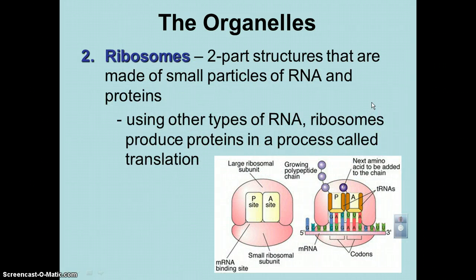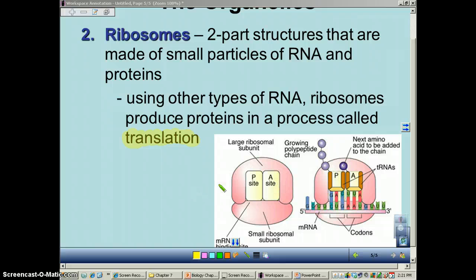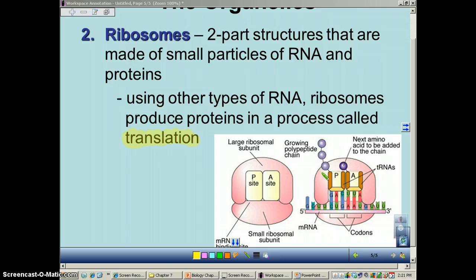Now let's start to look at some of the various organelles. The first organelle we want to look at is the ribosome — and remember, the ribosome is really, really important. It is the site where translation occurs. During translation, the mRNA is being read by the ribosome, and then the tRNA — which are these funny-looking U-shaped things — is where the mRNA code will be translated into your growing polypeptide. Ribosomes are your site of translation.